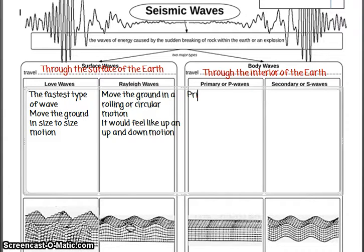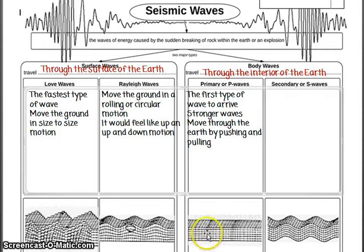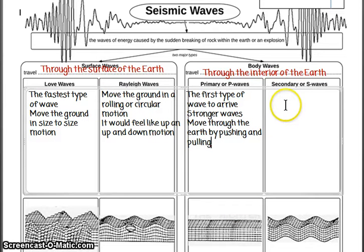P waves, also known as primary waves, are the first type of wave to arrive somewhere. These are generally the stronger waves and they move through the earth by pushing and pulling. If you look at the diagram, some of the bricks are getting compressed and some are getting stretched — it's sort of like taking a block of jello and squishing it from side to side with your hands.